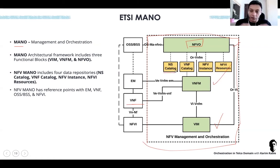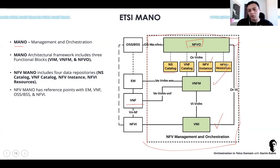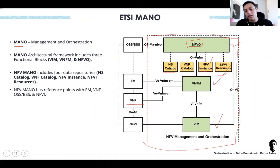In the NFVO we have the NS Catalog — a catalog that includes all the network services modeled in that NFVO. We have the VNF Catalog — a catalog of all VNFs to be onboarded. We have the NF instances: if you instantiate a VNF you will see it as a VNF record; if you instantiate a network service you will see it as an NS instance. And we have the NFV resources — for example, if the NFVO manages 10 DCs, you know from the NFVO that a DC includes 15 servers, how many CPUs, how many are utilized, and how many are available for new services.